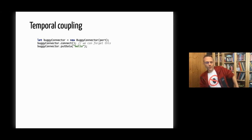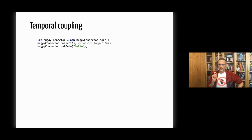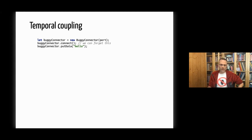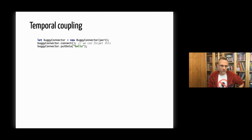Another bug source is temporal coupling — where the developer must call things in the right order and there's nothing to enforce that. A classic example: if we forget to call the connect method, the putData call throws an exception. If this is in a corner case, we'll discover this bug late and in production.